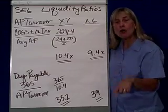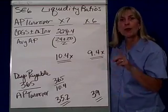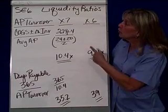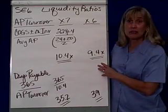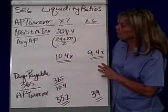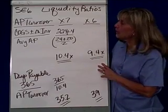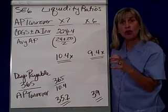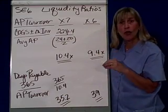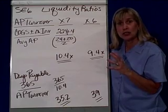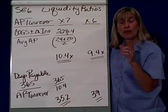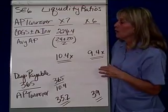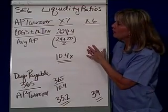In other words, how quickly are you paying your bills, or how many times a year do you pay your bills? We're using short exercise six again. You'll recall that the accounts payable turnover is the cost of goods sold plus or minus the change in inventory, depending on whether the change went up or went down.